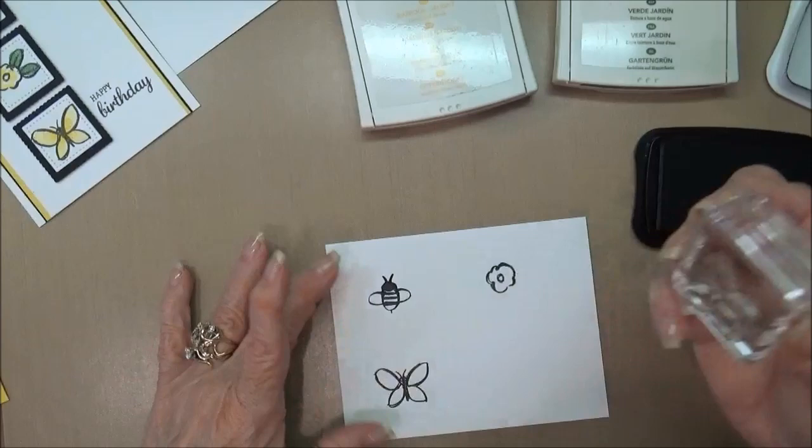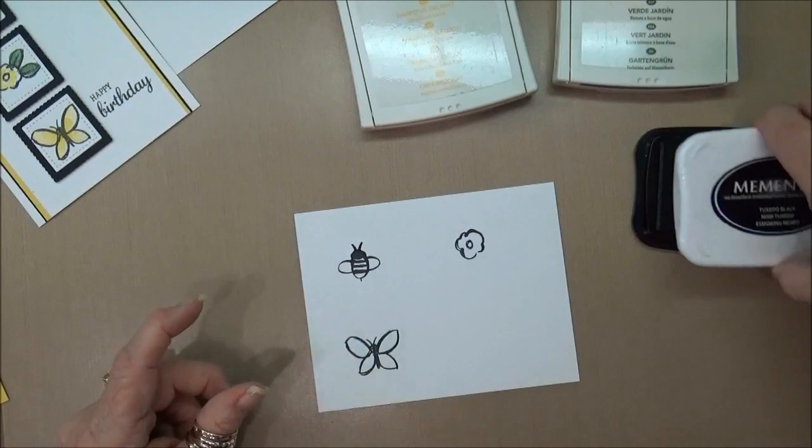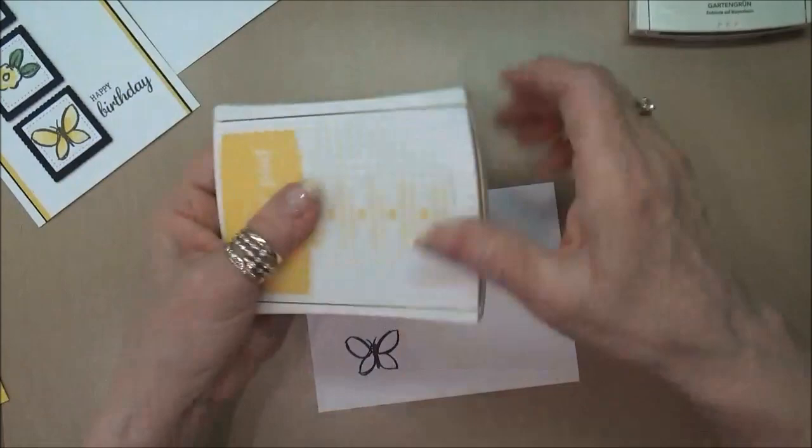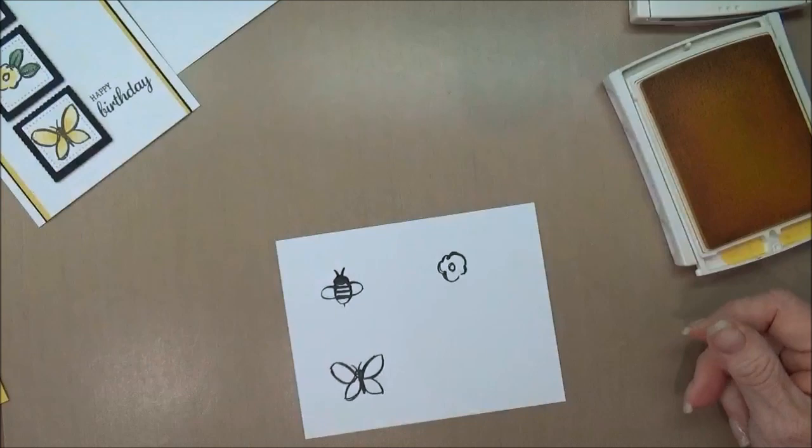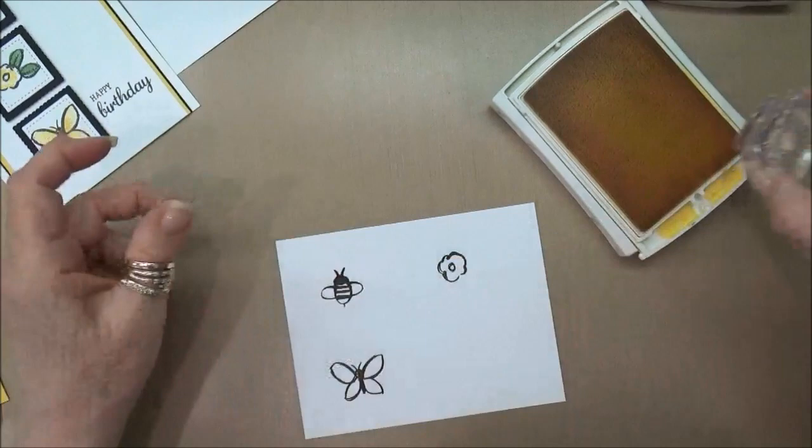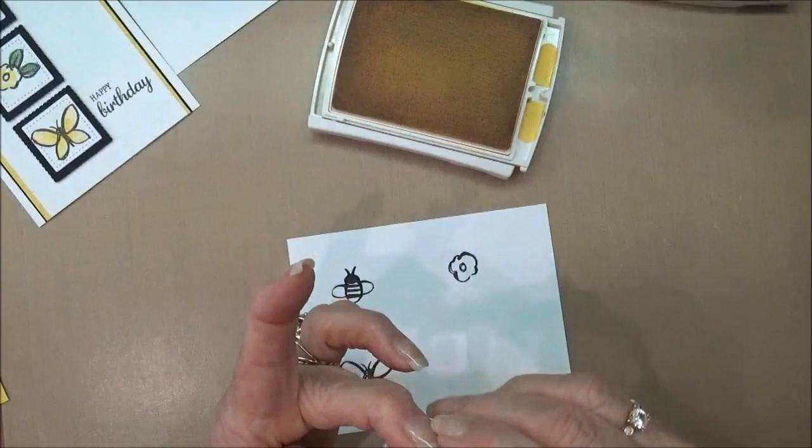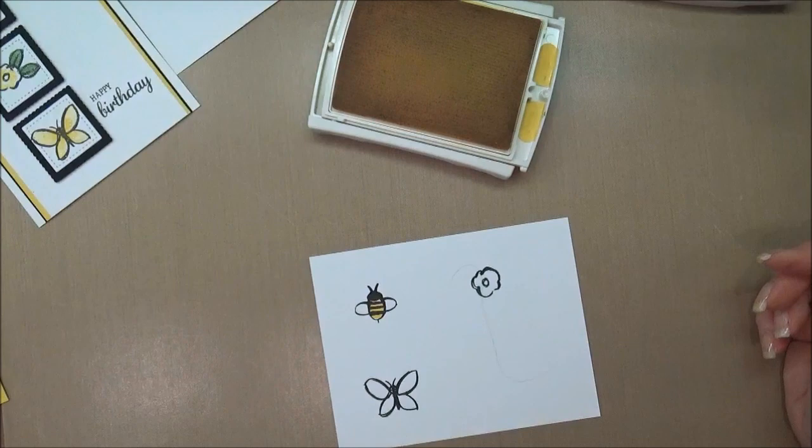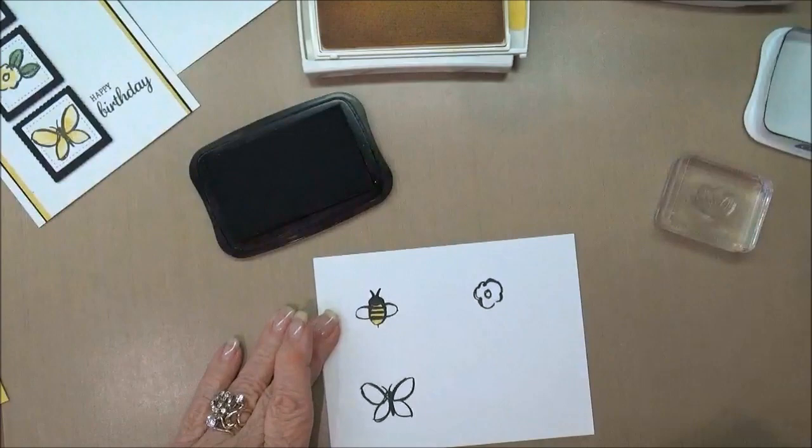And our butterfly. I appreciate you stopping by my YouTube channel today or my blog wherever it is that you're viewing this. I really appreciate you coming by and if you are watching on YouTube I hope if you like the video that you'll give it a thumbs up and to please go ahead and subscribe that would be great. So now we're going to take the daffodil delight and we're going to stamp the bee's body and this is just going to be full strength. Okay, and then we'll do, oh I forgot to do the leaves, let me go ahead and get those stamped first.